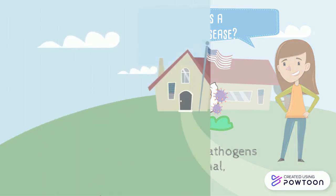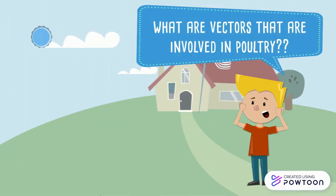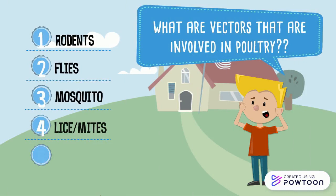What are the vectors that are involved in poultry? There are five types: rodents, flies, mosquitoes, lice or mites, and wild birds.